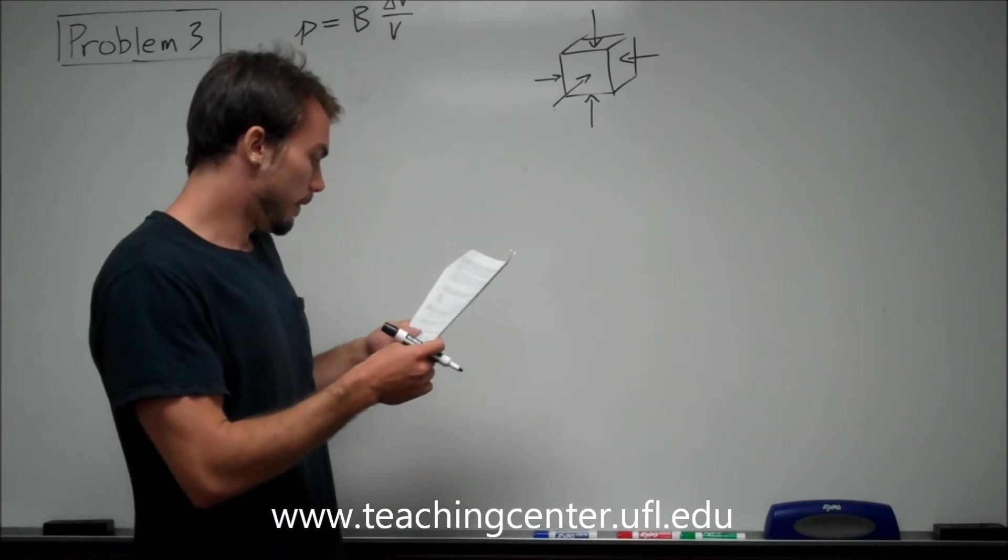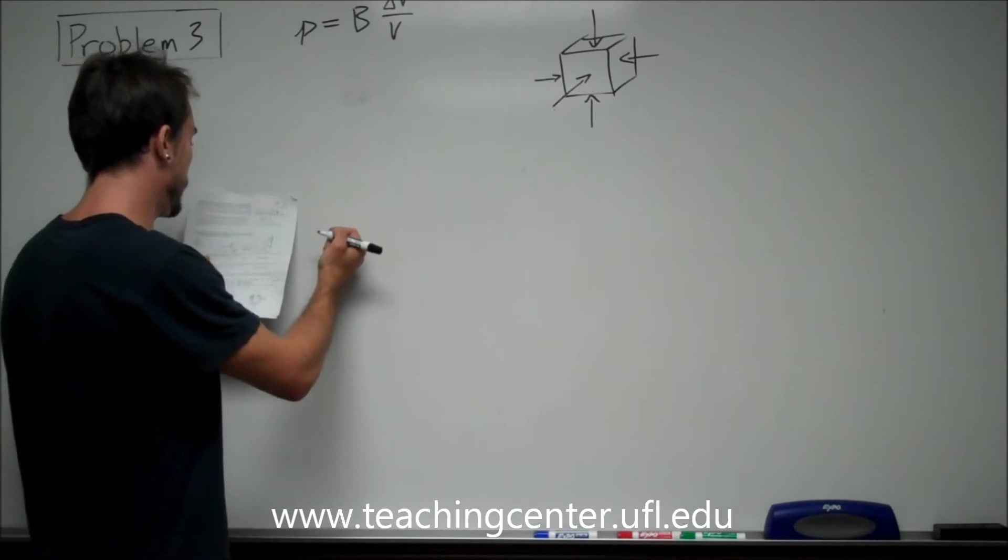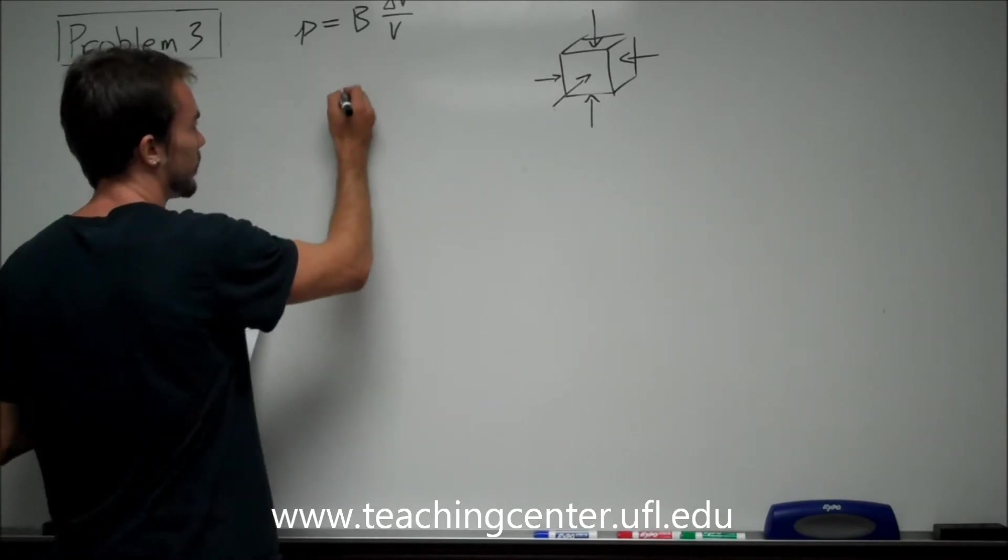So with that all in mind, let's see what they gave us. We have the bulk modulus in 4.7 times 10 to the fifth. So that's going to be this guy.